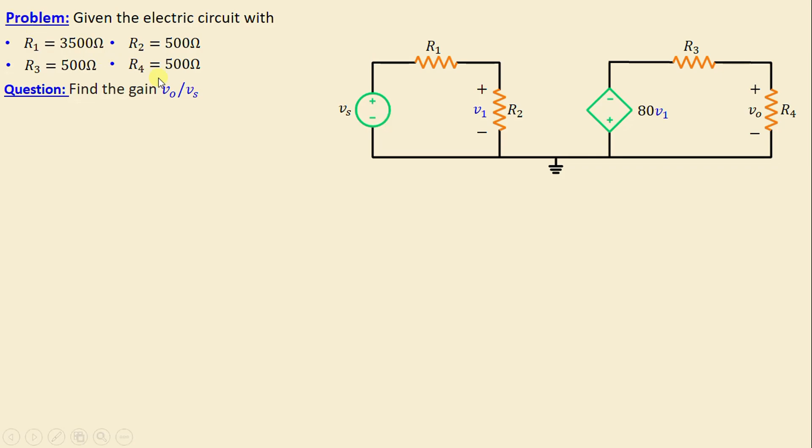labeled R1 through R4, along with one independent voltage source vs. Additionally, we can observe the presence of a